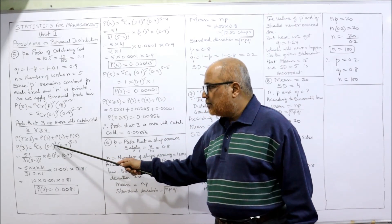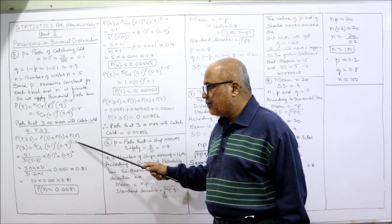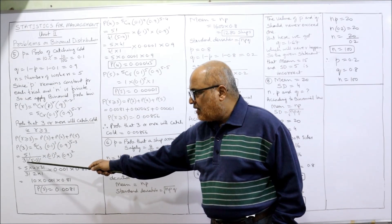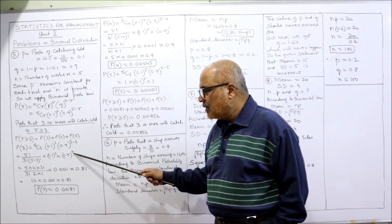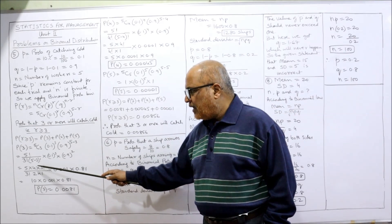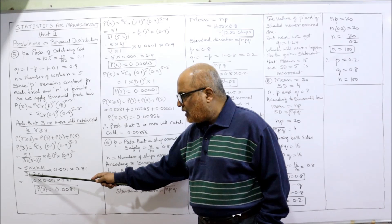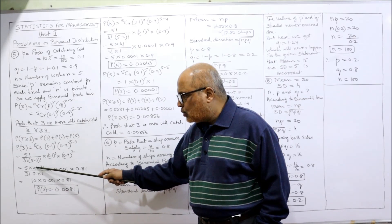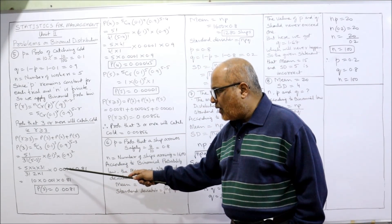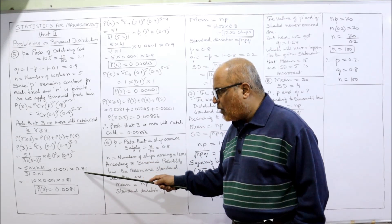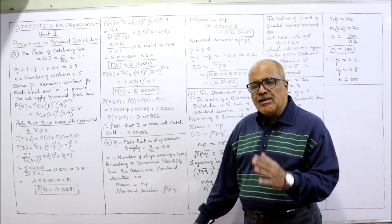P(3) = 5C3 × (0.1)^3 × (0.9)^(5−3). 5C3 = 5! / (3! × 2!) = 10. (0.1)^3 = 0.001 and (0.9)^2 = 0.81. Multiplying: 10 × 0.001 × 0.81 = 0.0081. So P(3) = 0.0081.